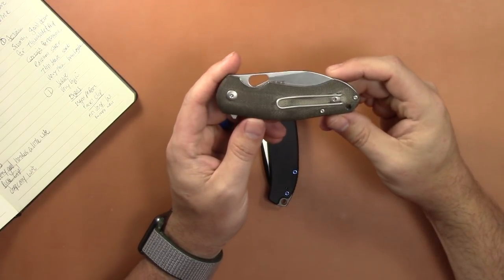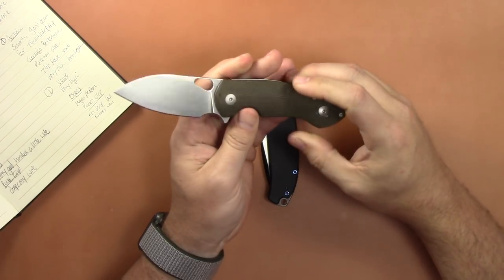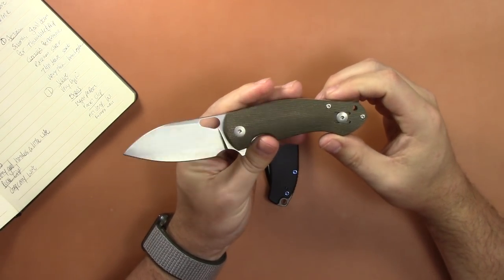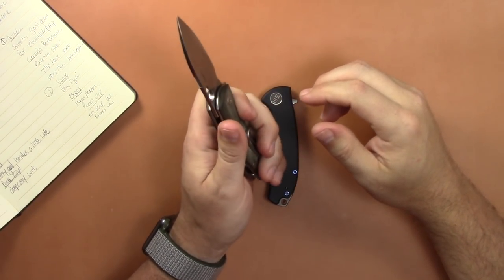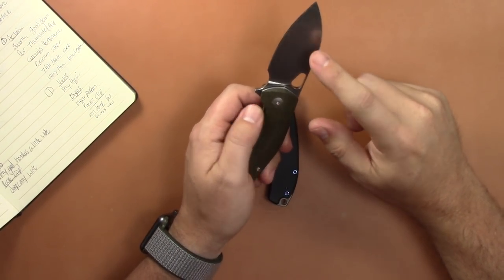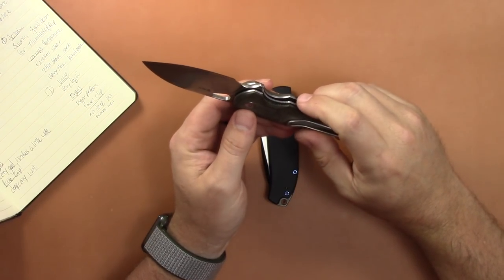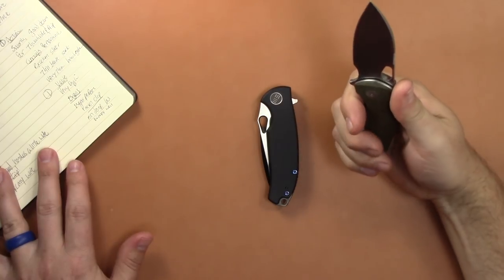The Biblio price wise $179 I believe is what I paid for this guy. And it does have good materials for the money, no doubt about it. You get canvas micarta or G10 depending on the model, you got M390 blade steel, really good deal for M390. You do have stainless liners and bearings for the action.